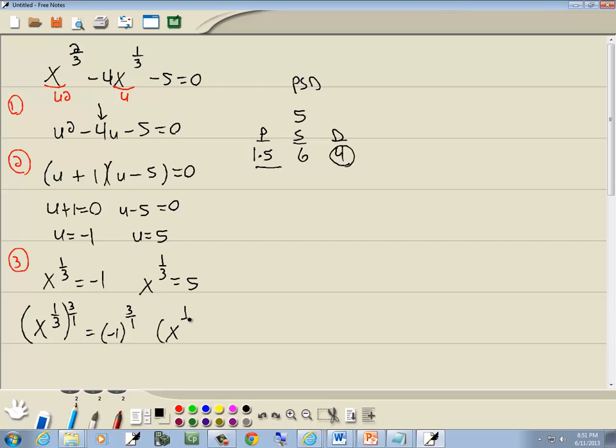And same thing on this one. So we've got x to 1 third, take both sides to the 3 over 1. 3's cancel, the 1's cancel, and I've got x. And 3 over 1 is 3. Negative 1 to the third power is negative 1. Now in this one, 3's cancel, 1's cancel, I've got x. And 5 to the third gives us 125.